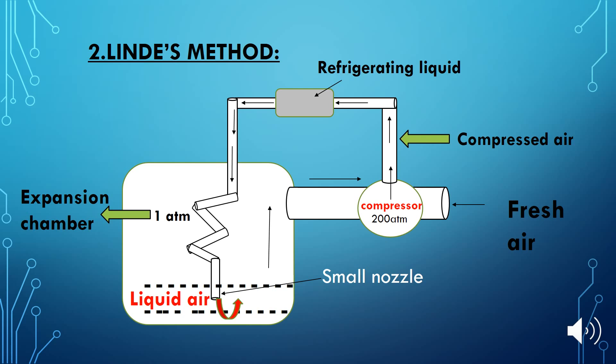As you can see in the diagram, fresh air enters the compressor where the gas is highly compressed at 200 atmospheres, then passed through the refrigerating liquid. The gas follows the pipes and comes out through a small nozzle.